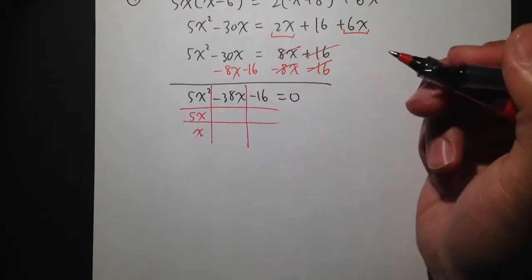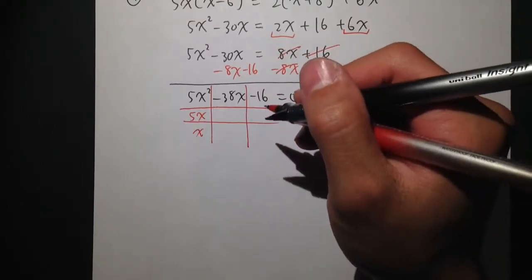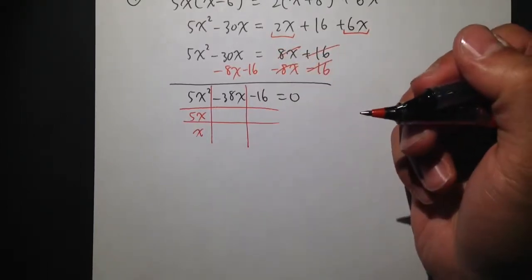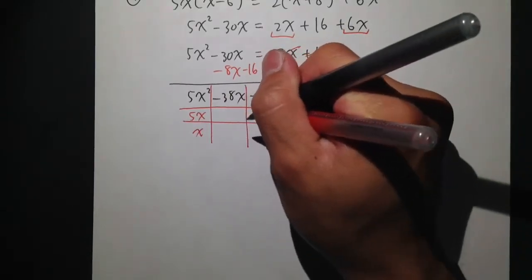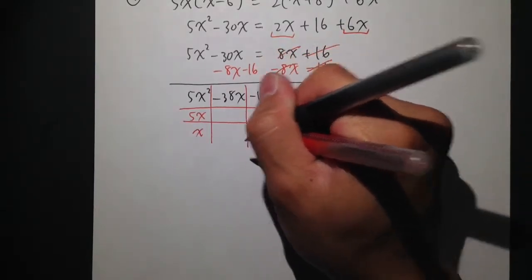But then to get negative 16, I can do 4 times negative 4. And maybe let's just give it a try. If I put down a 4 right here and then put down a negative 4 right there.